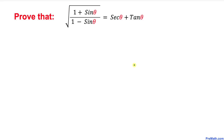Welcome to pre-math. In this video tutorial we have got an interesting trigonometric identity and we are going to prove it. On the left hand side we have the square root of (1 + sin θ) divided by (1 - sin θ), and this equals secant theta plus tangent theta. Let's go ahead and get started with the proof.